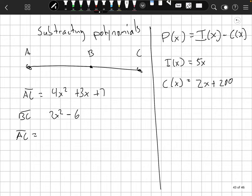Okay. Let's take a look at subtraction. Let's say you have a line segment and you know AC has this value 4x squared plus 3x plus 7. So the complete distance. And BC has 2x squared minus 6. What's AB going to be?